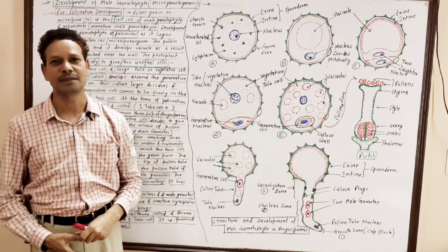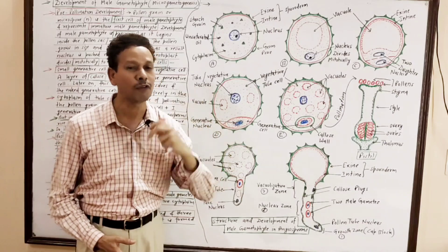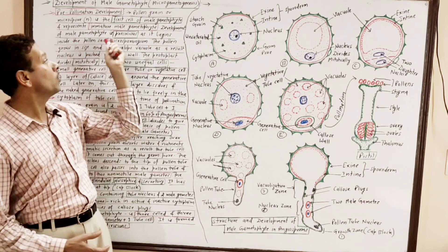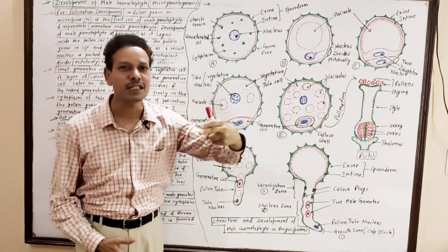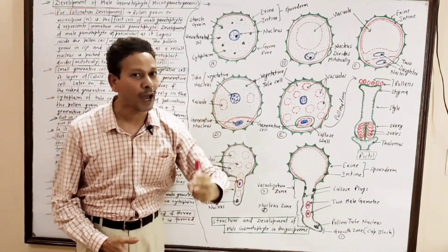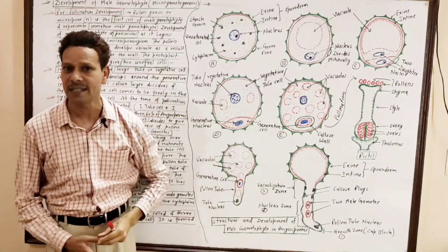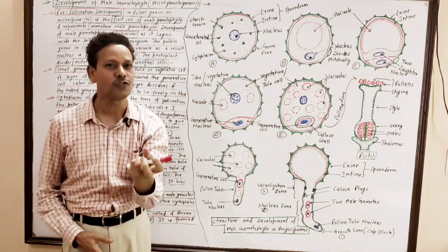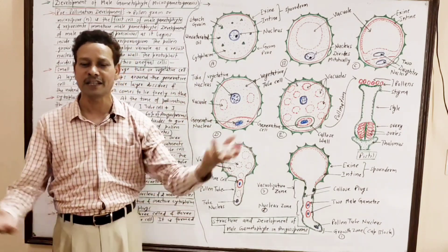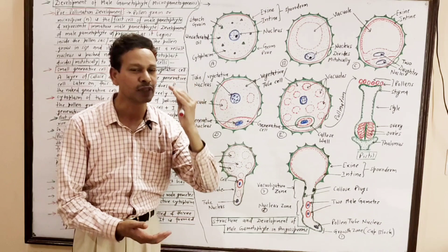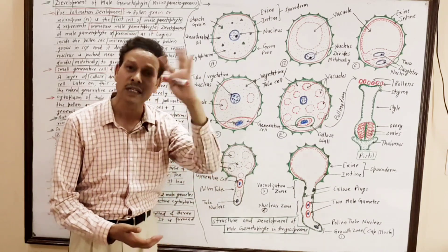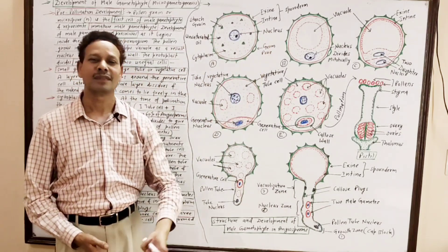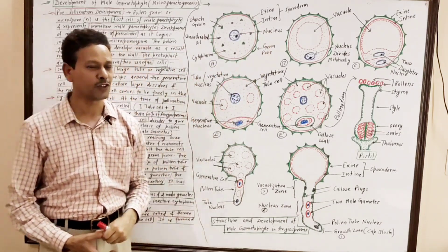In case of angiosperms, the development of male gametophyte is precocious. Precocious means that the development of male gametophyte — microgametogenesis — begins inside the pollen sac or microsporangium before the pollen is released. That kind of development which occurs inside the pollen sac before the release of pollen is called precocious development.